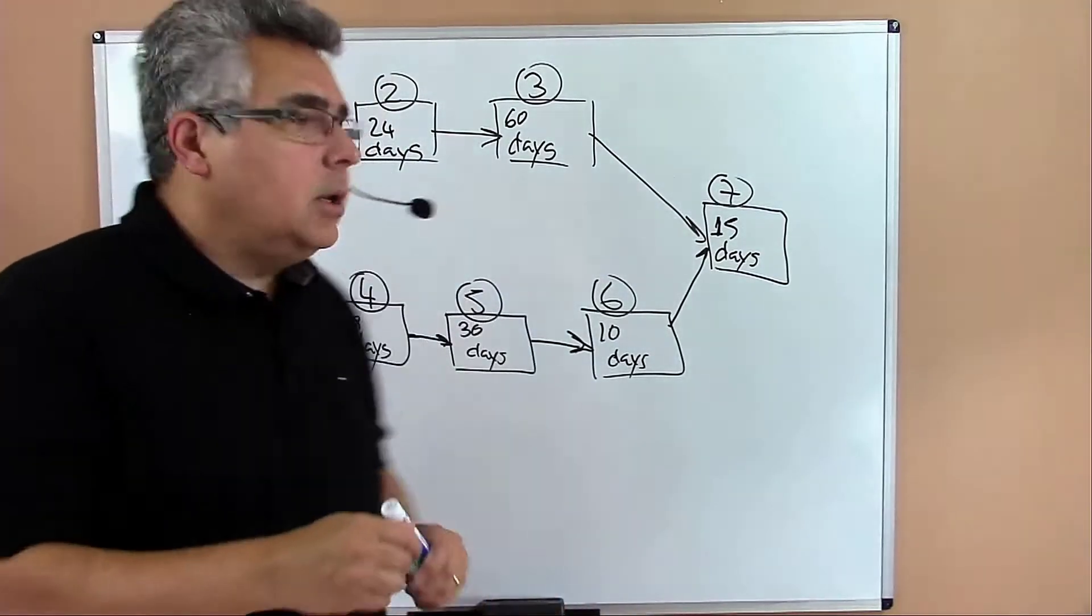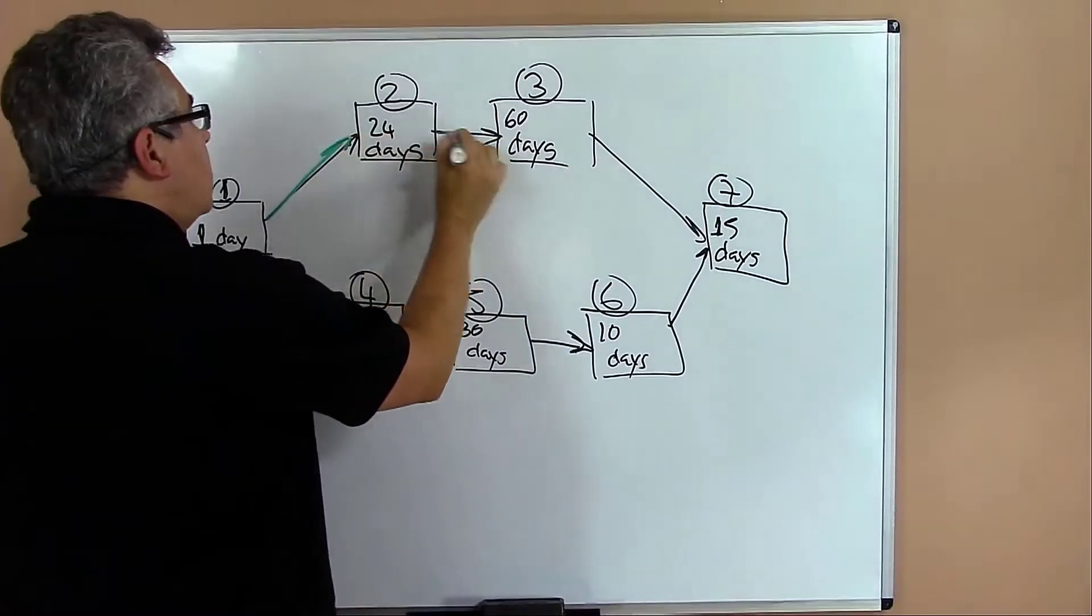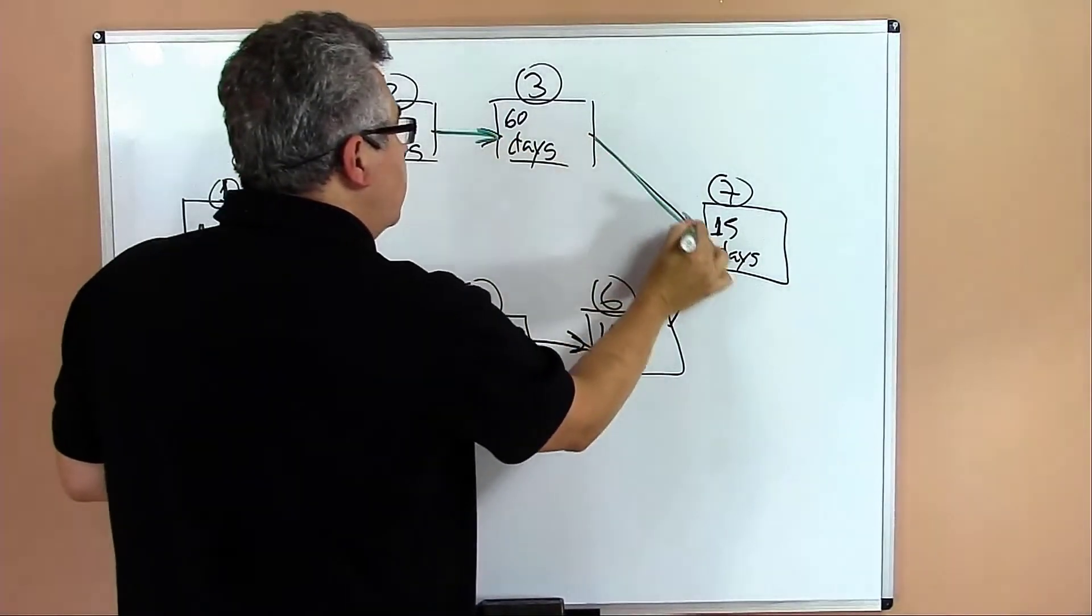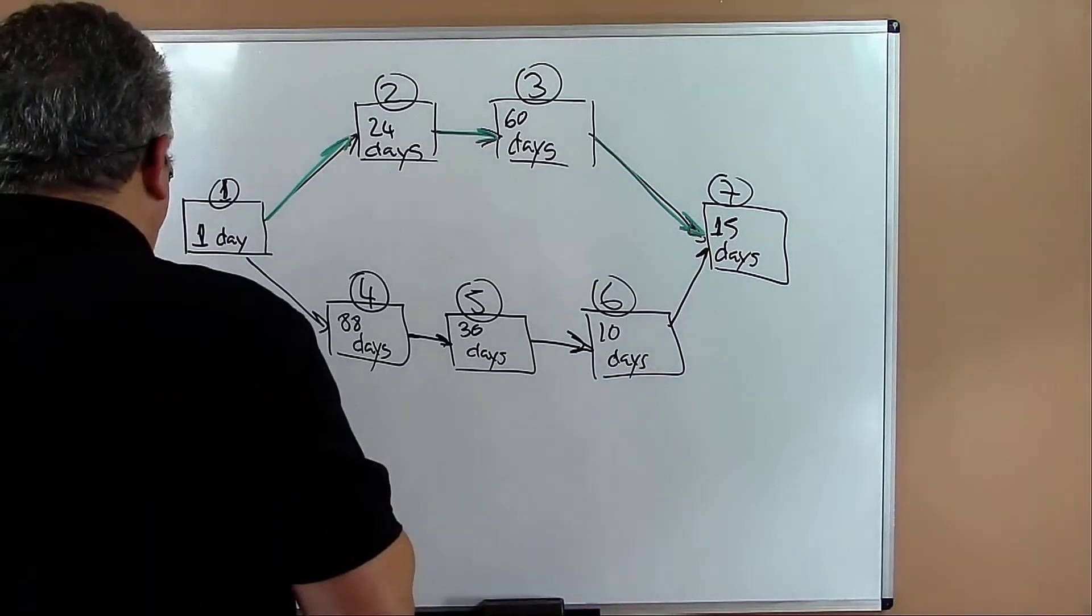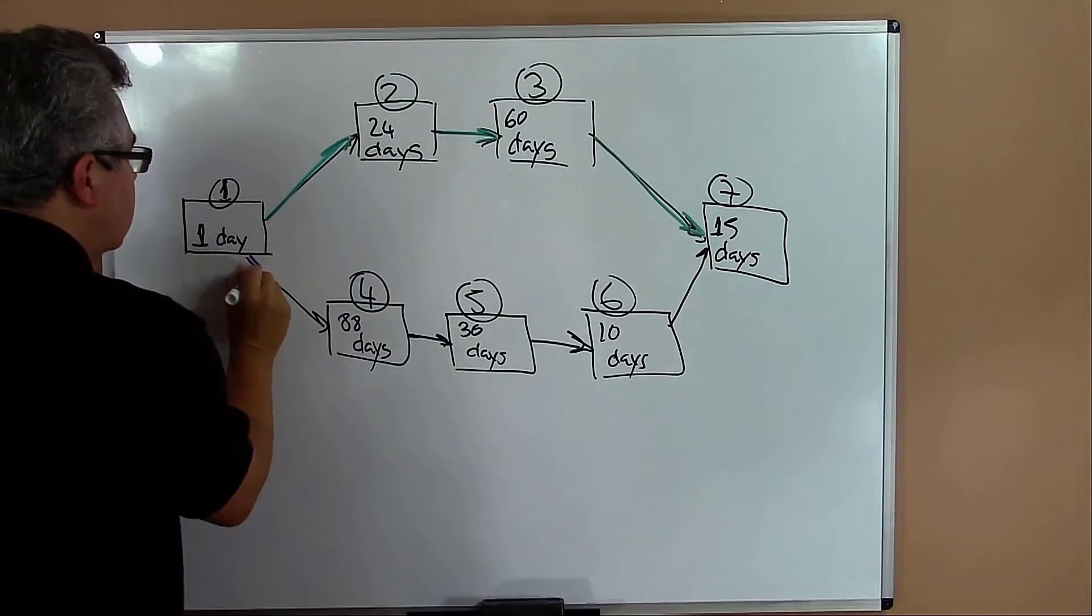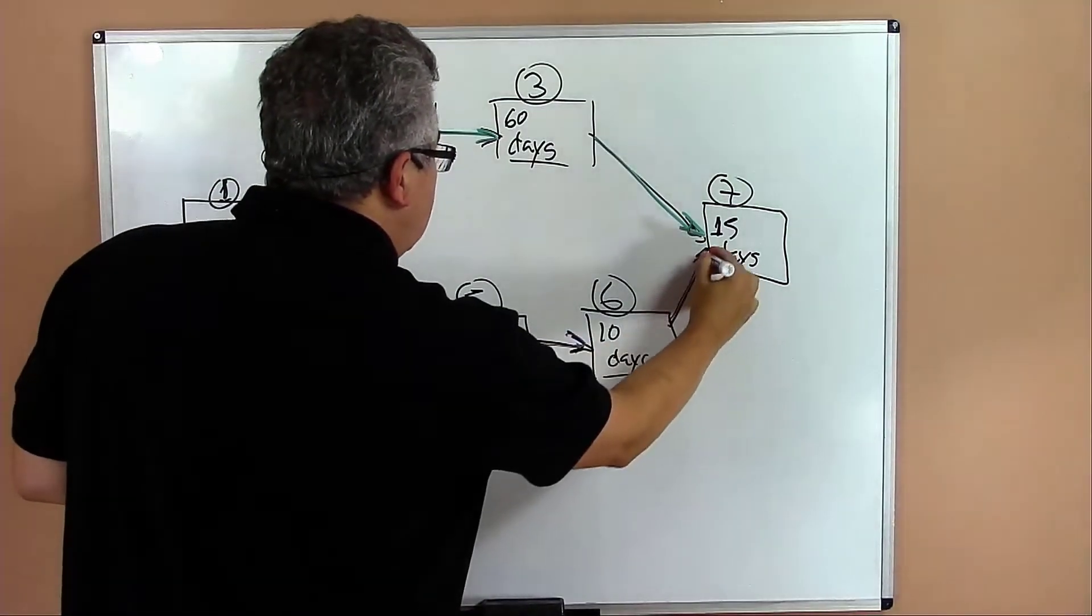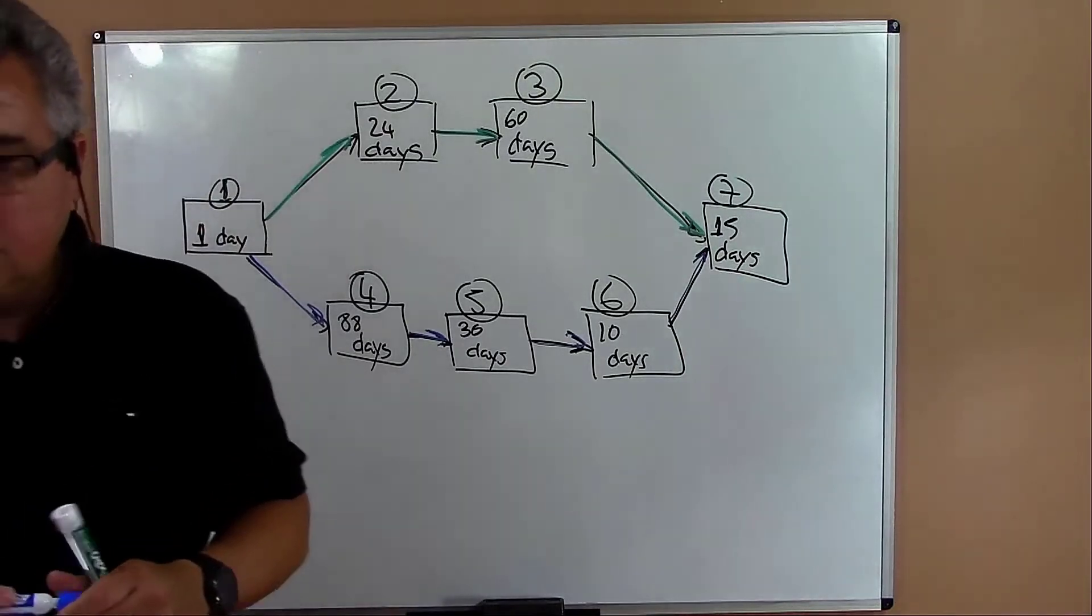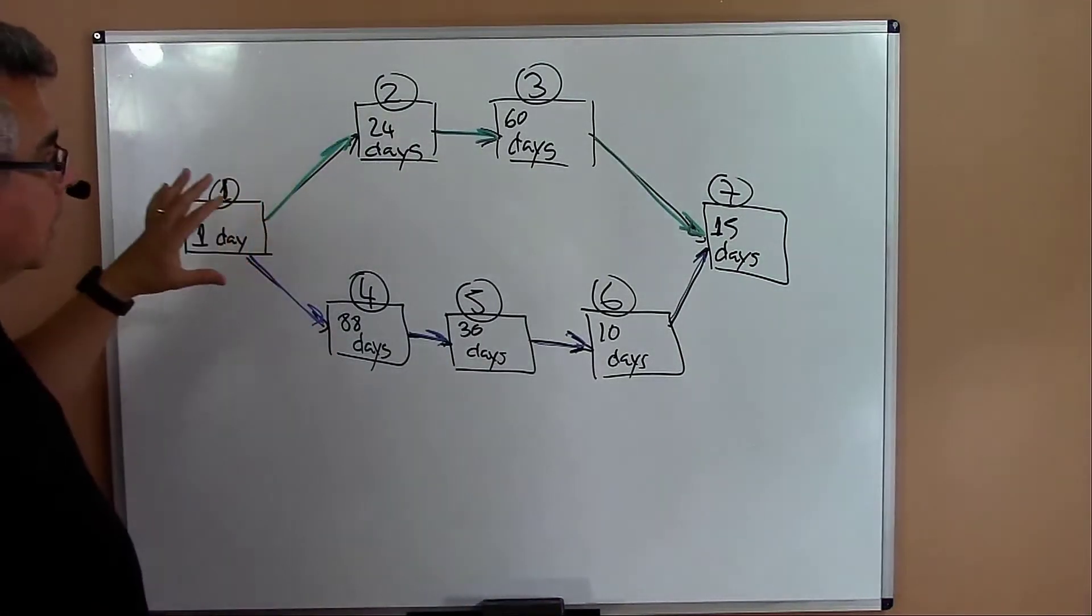Each side of my network, I have two paths. Two paths, okay? One green and another one blue. Can you see the blue and the green? So we have two paths.